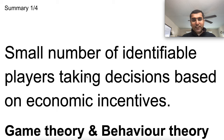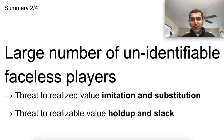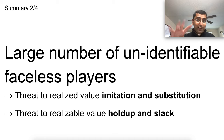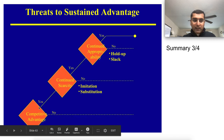To summarize: if there are a small number of identifiable players with economic incentives acting rationally, use game theory. If they're predisposed to make mistakes, use behavioral theory. For large numbers of unidentifiable faceless players, think causally — they can eat into your added value through imitation and substitution, or into your appropriated realizable value through hold-up and slack. Check for competitive advantage first — if you don't have competitive advantage, nothing else works.